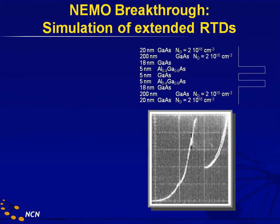Here you see a publication typical from 1994, where somebody actually published an IV curve and they didn't even scan it in digitally — they just literally showed a photograph of a CRT. It wasn't untypical at the time. They write a layer structure where they say their central RTD is a 5 nanometer, 5 nanometer, 5 nanometer device of 40% aluminum gallium arsenide barriers, then an 18 nanometer gallium arsenide buffer, a 200 nanometer low doping buffer, and then a high doping contact. That's the double barrier structure, and it looks pretty benign — nothing fancy about it.